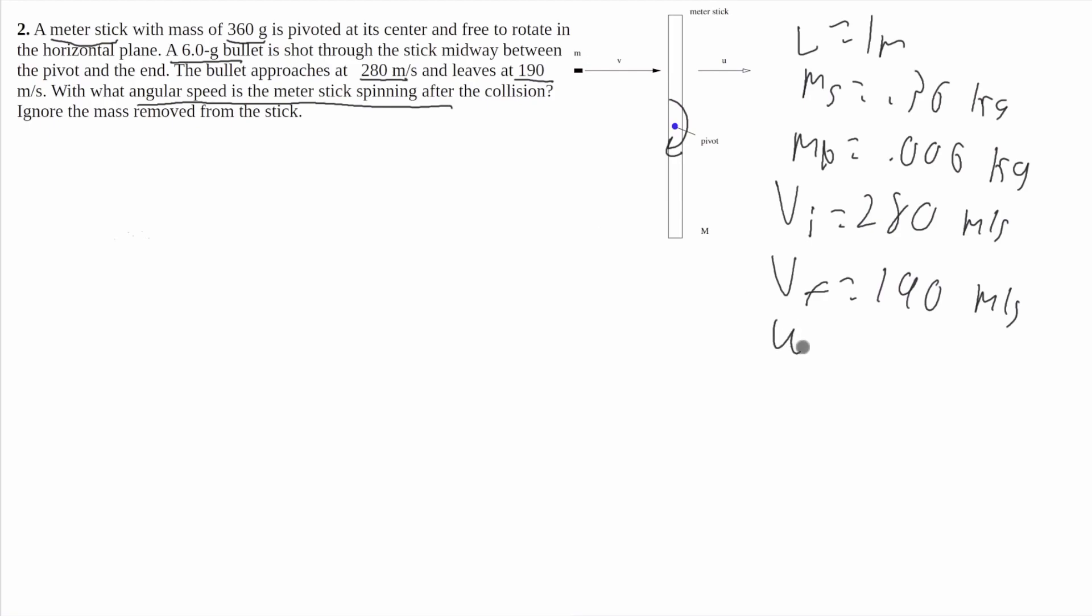And again, it wants us to find the angular velocity of the stick after the collision. To solve, we'll use conservation of angular momentum. I'm going to say that momentum before is going to be equal to momentum after. Now, it tells us that this meter stick is not initially spinning before the collision, so it's not going to have any angular momentum, but this bullet will.